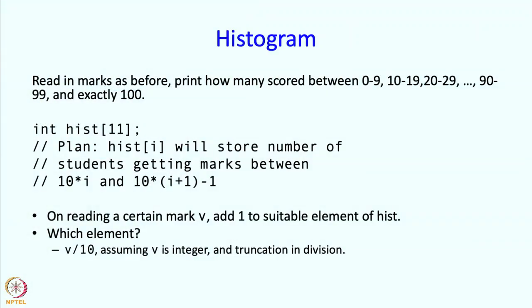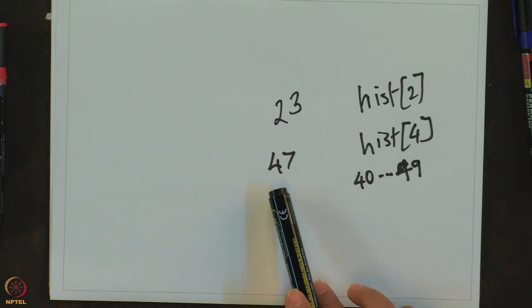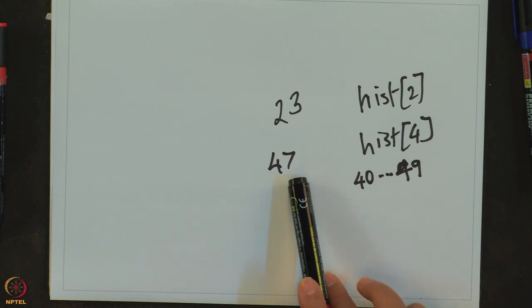How do we do this? Given a number in the range 40 through 49, how do we get a 4 out of it? We just do integer division. We assume that v is an integer, or we convert v to an integer if it is not already, and we divide by 10. If we divide an integer by another integer, we get the truncated division. If we divide 47 by 10, we will get 4 because the remainder 7 will be thrown out.